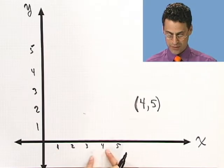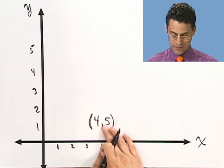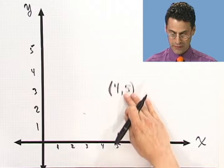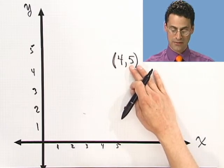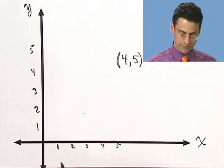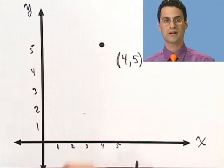OK. Well, where would this thing go? Well, we go 4 over in the x direction, and then you go 5 up. So it would be 4 over, and then 5 up. And so what I do is I put a dot right around there. Boom. There's my dot.